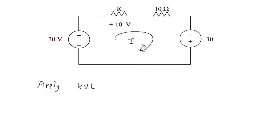This will be minus 20, then plus 10 volt. Then this voltage will be 10 into I.